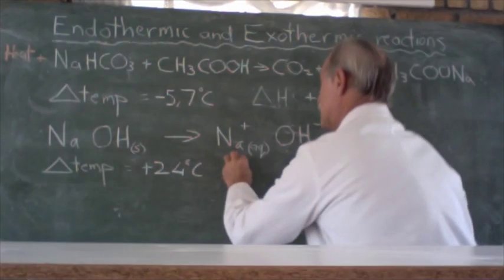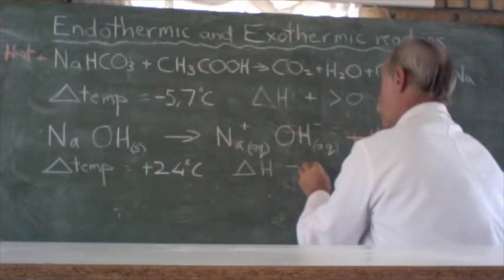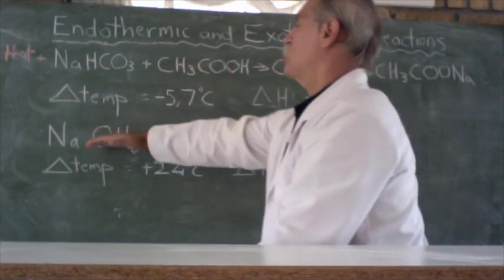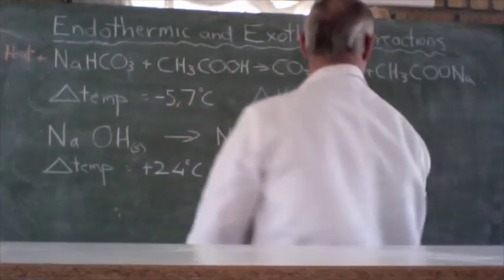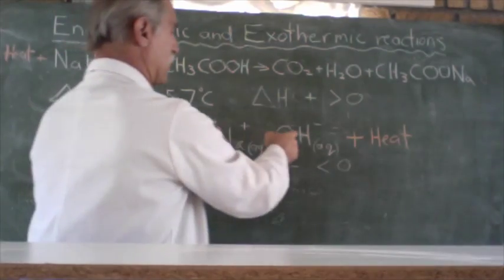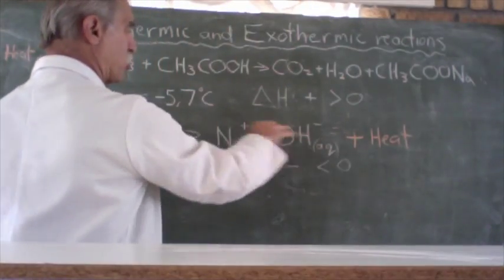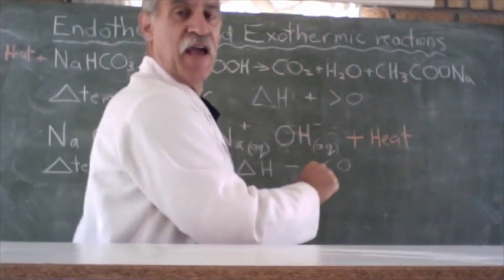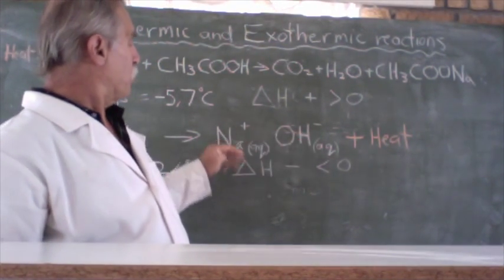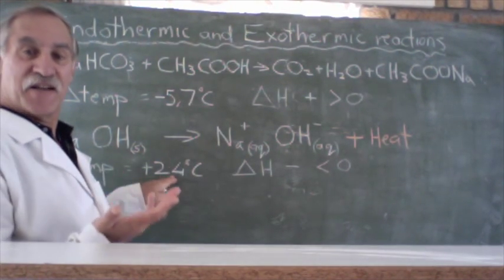Now if we look at this case here, the delta H change of enthalpy or heat is negative, less than zero. Why? Because from the point of view of the chemicals, they started out with a certain amount of energy, they ended up with less energy. Heat was given out. Our reactants had more energy than our products, so heat was given out into the solution. So the internal energy of these chemicals has decreased. From their point of view, their delta H or internal energy has decreased, and as it decreased it raised the temperature of the thermometer and its surroundings.